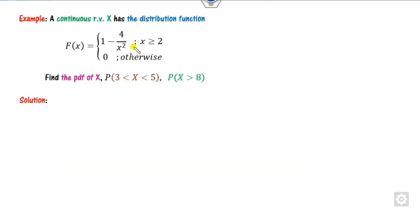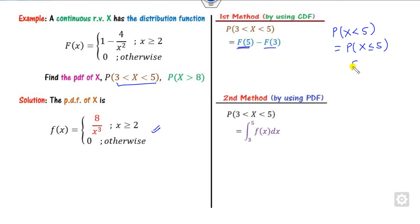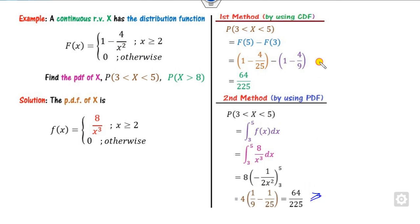Now consider a continuous random variable — infinitely many points. To find the PDF, take the derivative of the CDF, giving small f(x) = 8x³ (within the relevant interval). For the first probability, since it is continuous, P(X < 5) = P(X ≤ 5) = F(5). Substituting: 1 − 4/25. For P(X > 3): substitute x = 3 into the CDF to get 1 − 4/9. For the PDF method, integrate small f(x) = 8x³ to get the same answer.